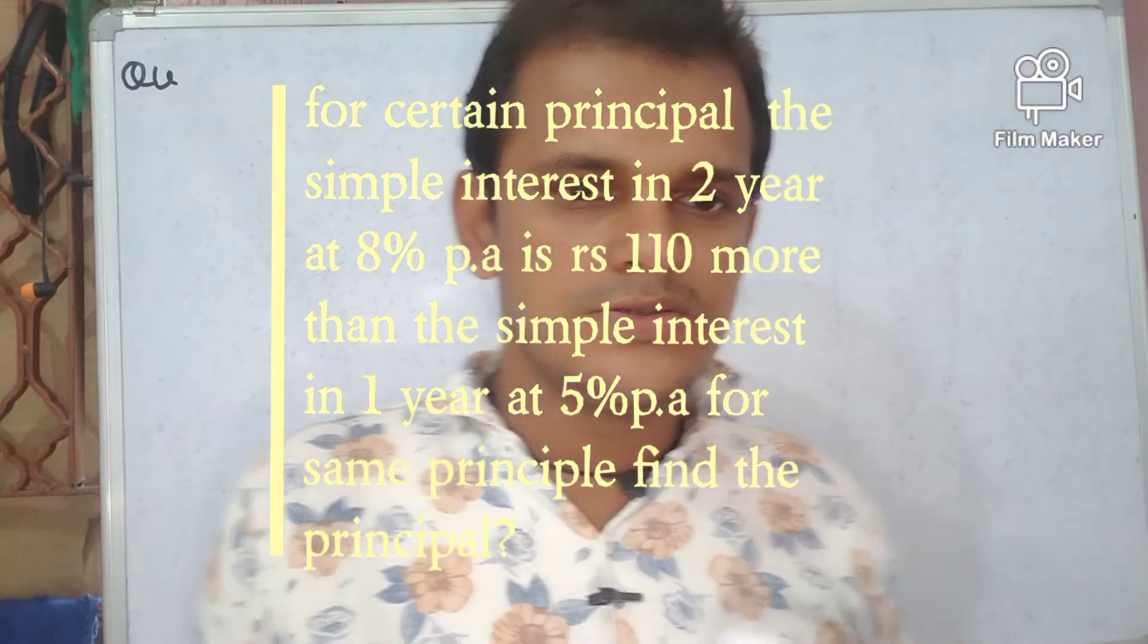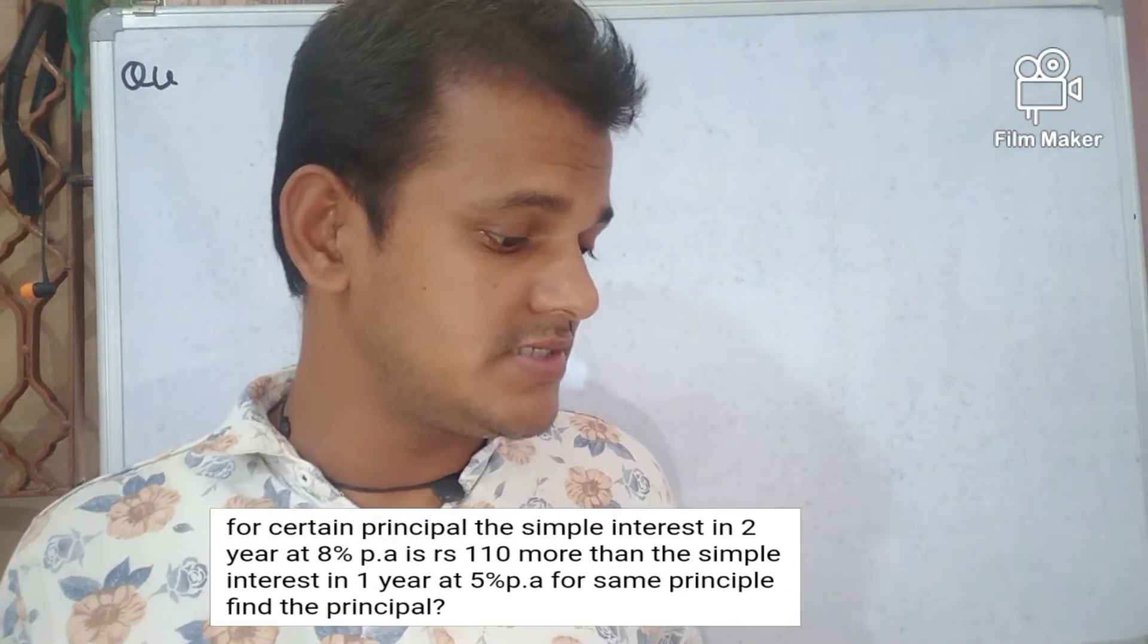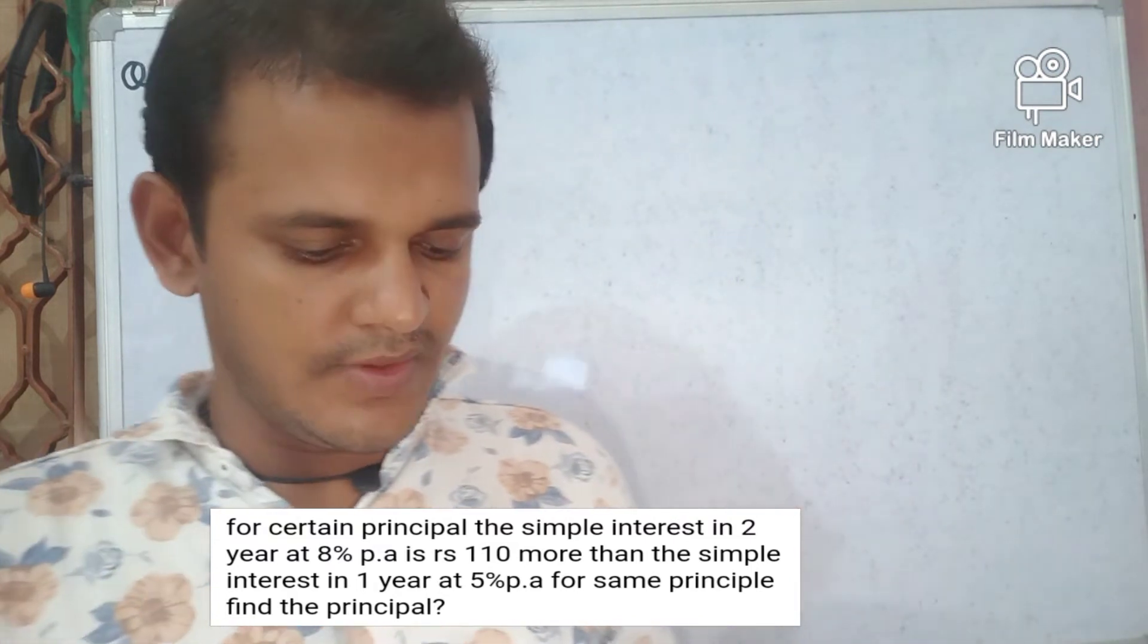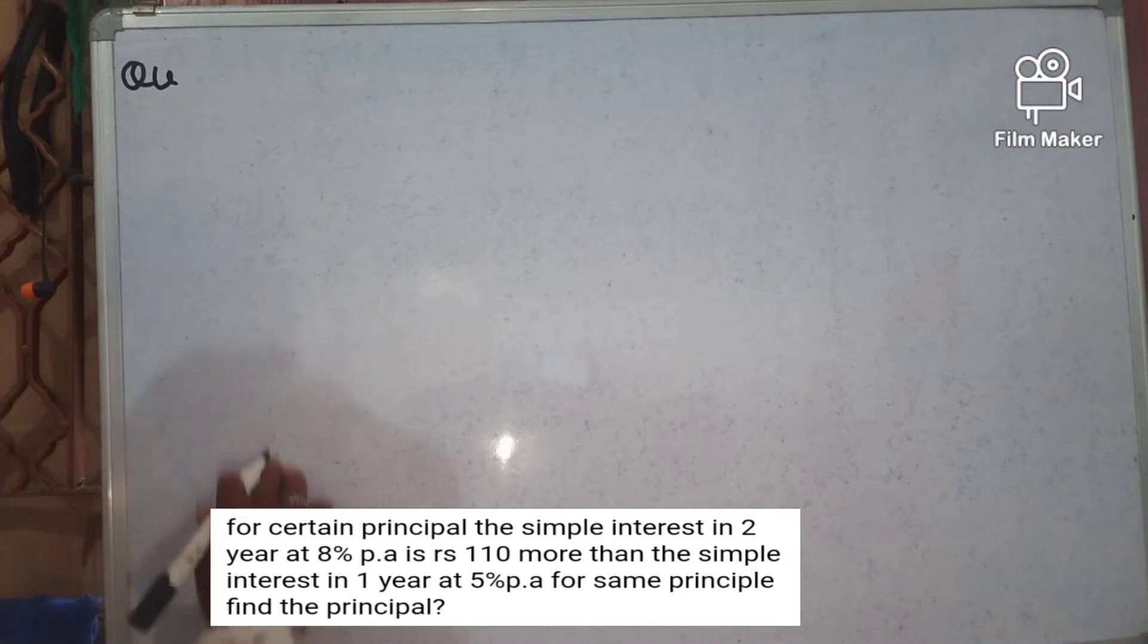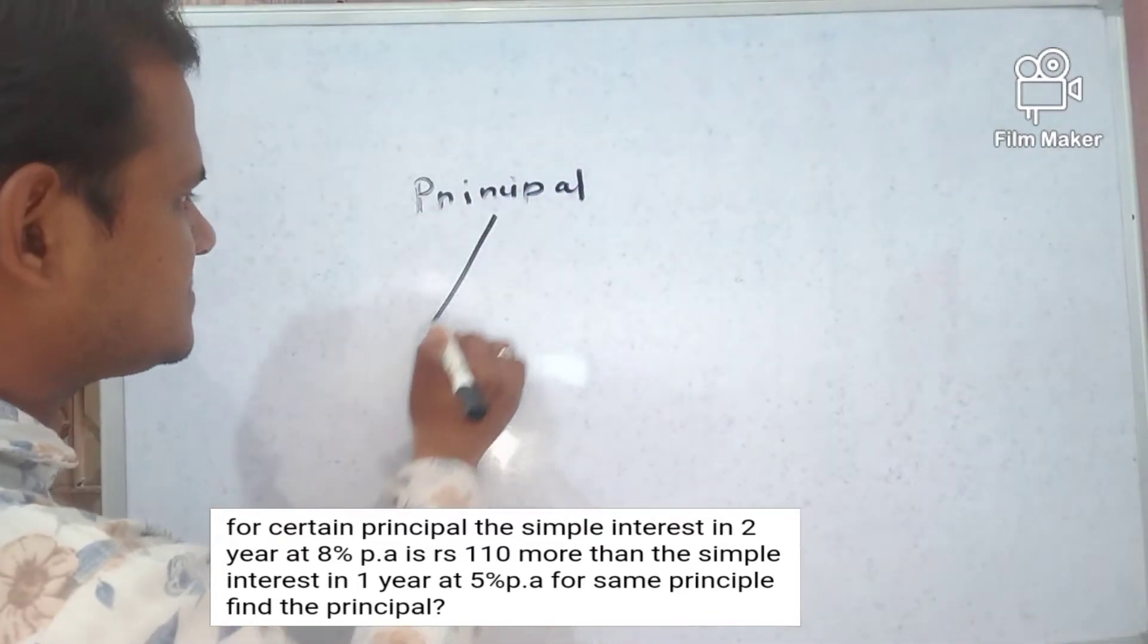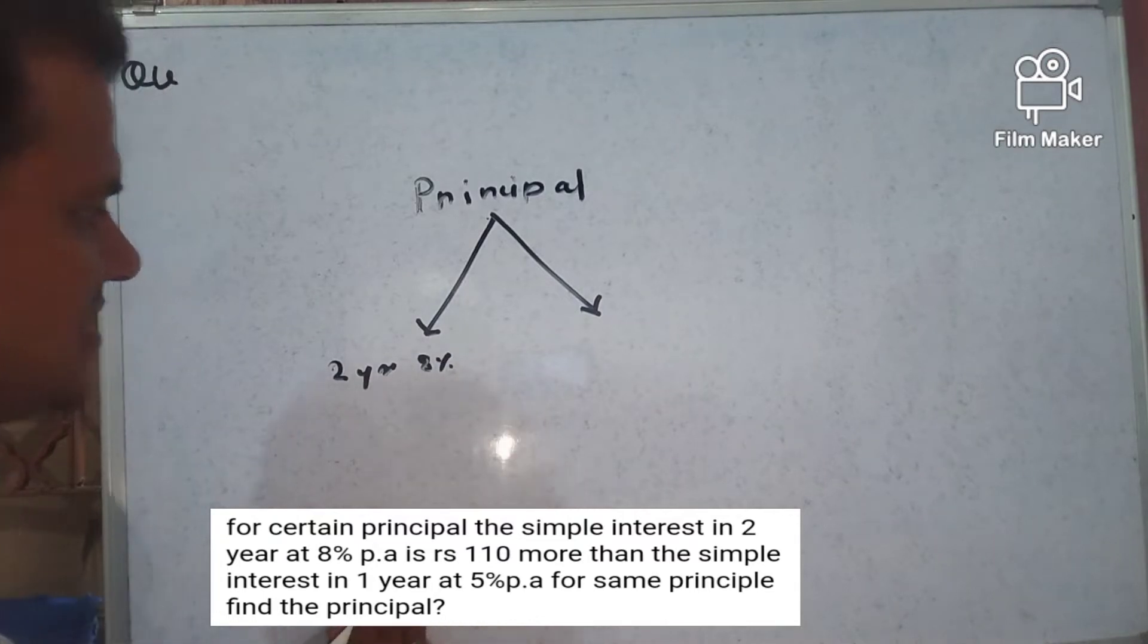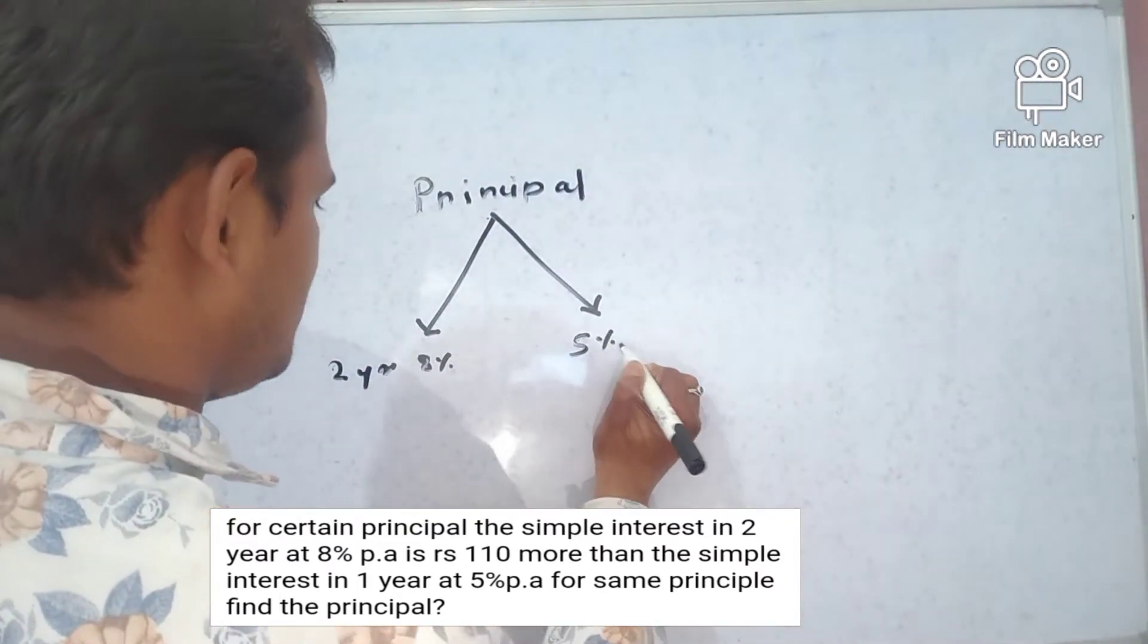Find the principal. So see here, for a certain sum the simple interest in two years at eight percent per annum is Rs 110 more than the simple interest in one year at five percent per annum for the same sum. Let's see here, the principal is the same for two years at eight percent and five percent in one year.